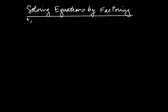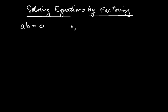We need to start off with a logical observation. Note that if somebody tells you that a times b — so you're multiplying two things together and you get zero — what would you conclude about either a or b? Well, clearly you'd be thinking that either a was equal to zero, or b was equal to zero. One of those two things had to be true.